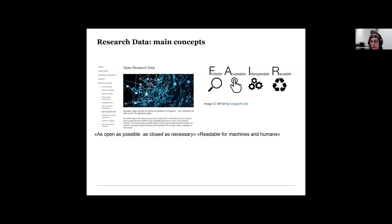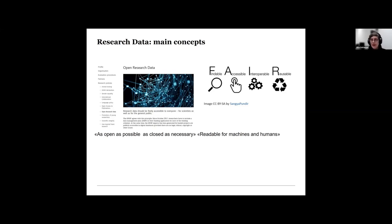There are a couple of main concepts important for us as libraries. First, open research data — the idea that data created and used in research is made as openly available as possible and as closed as necessary. 'Closed as necessary' mostly implies legal and ethical constraints when working with sensitive data. Then we have FAIR — findability, accessibility, interoperability, and reusability of data. Open is the gold standard: all data should be FAIR and open. FAIR is particularly about preparing data so not only humans but also machines can work with it, which is important for reusability. As research libraries, we are closely related to open research data and FAIR data.